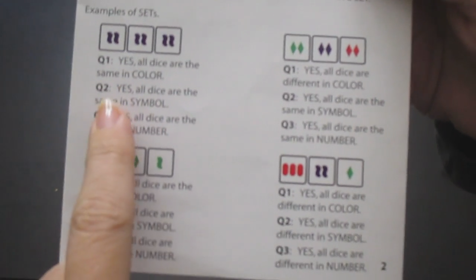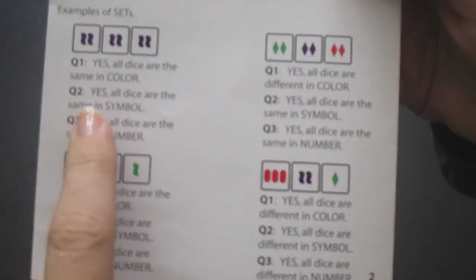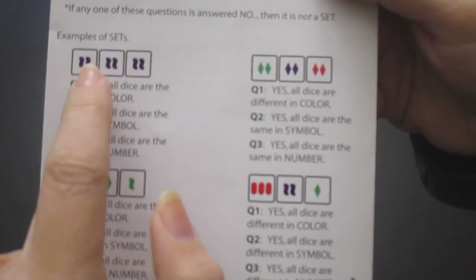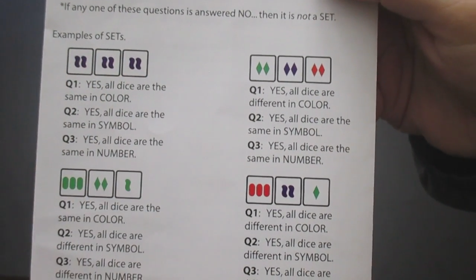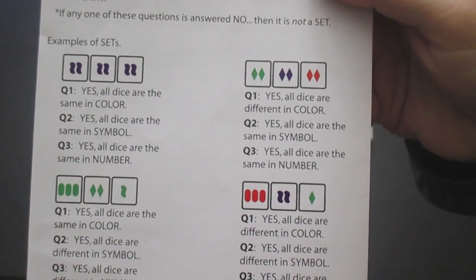In another example over here, you can see that this makes a set because they are all the same color, they are all the same symbol, and they all have the same number on them.